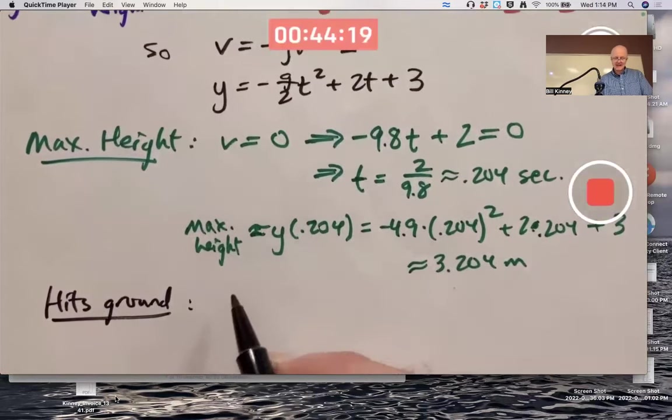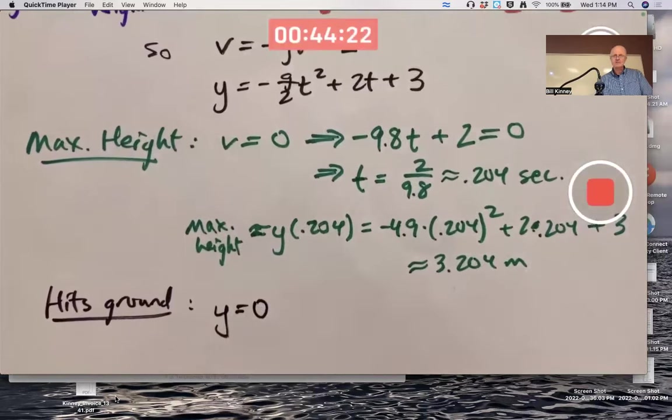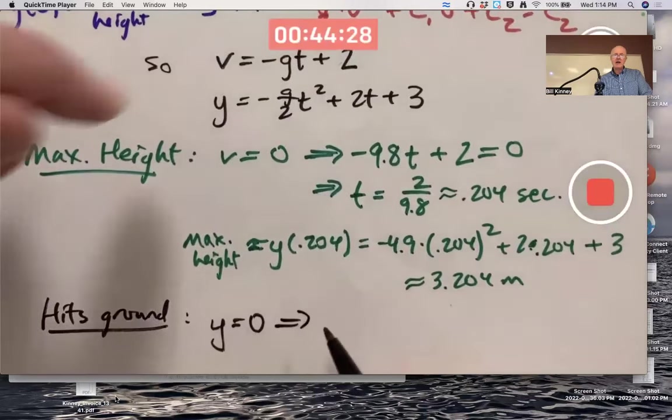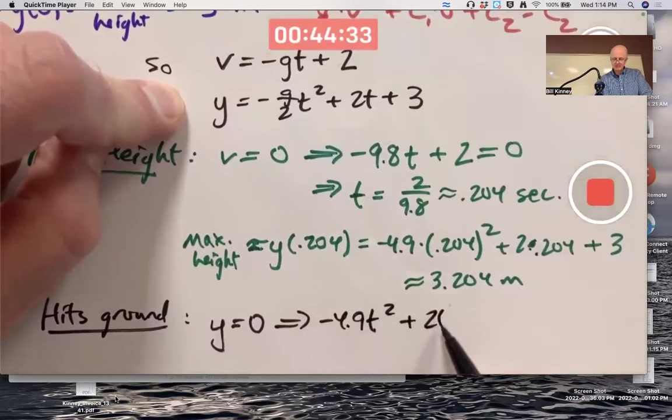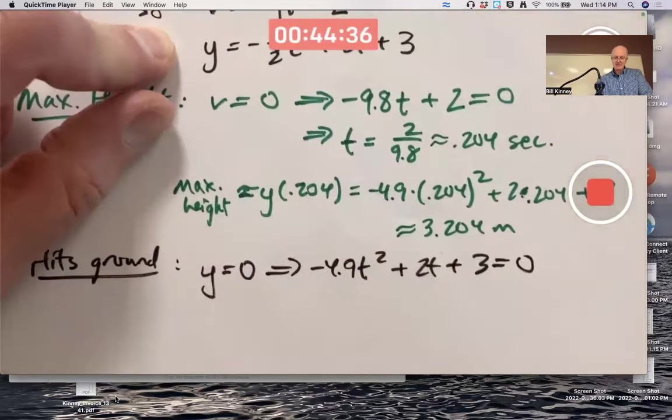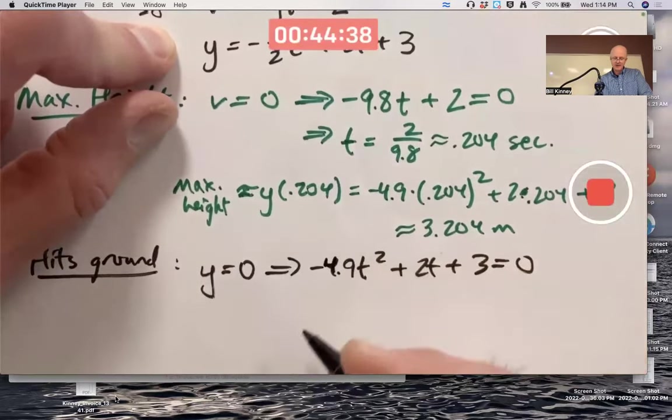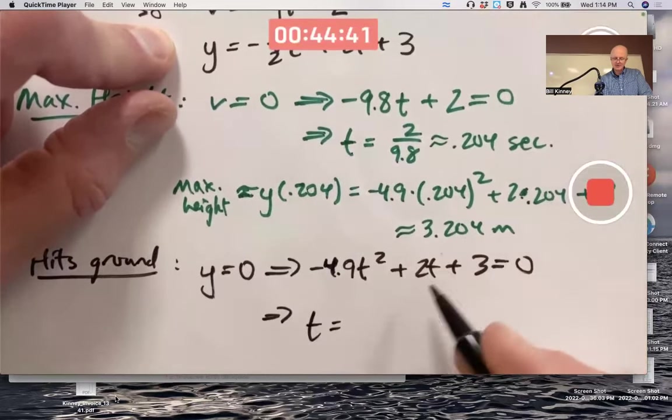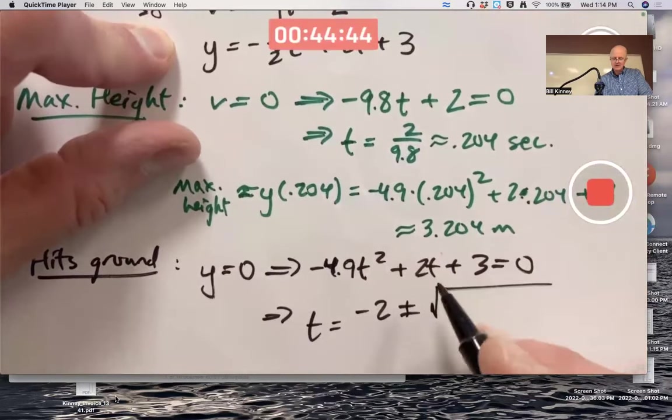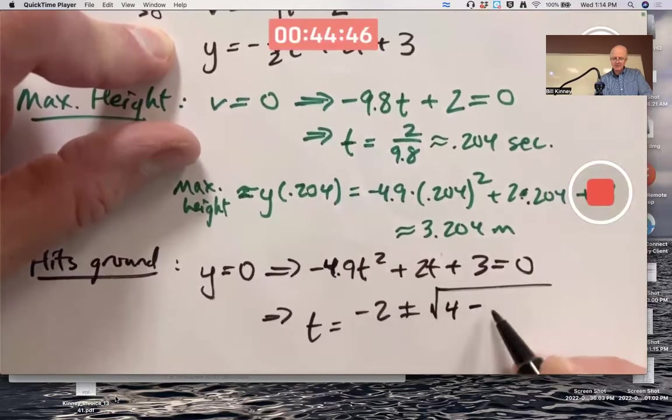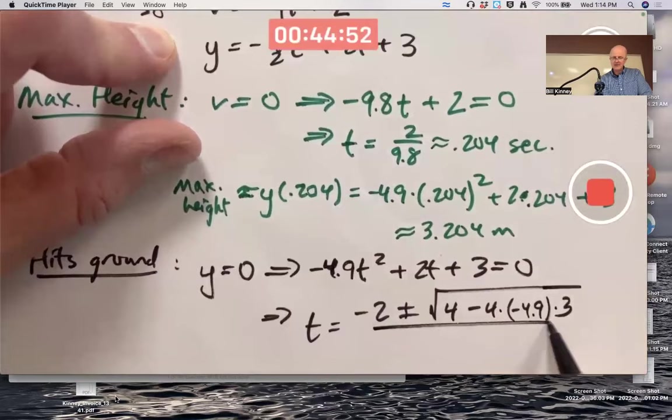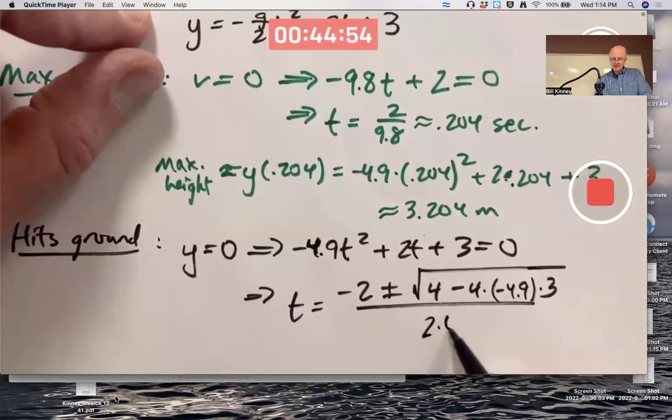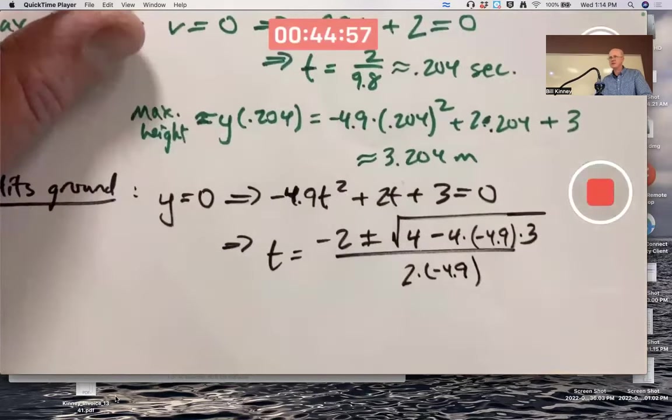Hitting the ground, we got to set Y equal to 0 and solve for T. So I'll use the Y equation: negative 4.9 T squared plus 2T plus 3 equals 0. To solve that by hand, you'd want to use the quadratic formula. T equals negative 2 plus or minus square root of 2 squared is 4 minus 4 times negative 4.9 times 3 all divided by 2 times negative 4.9. That's just the quadratic formula.